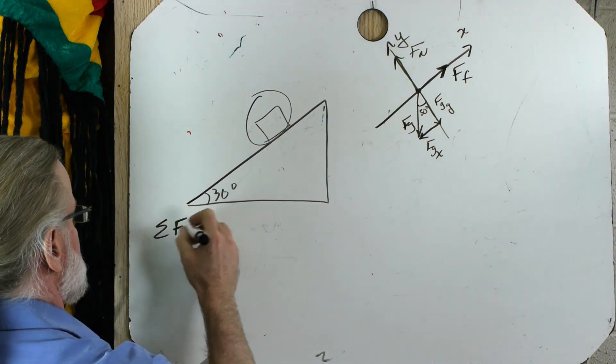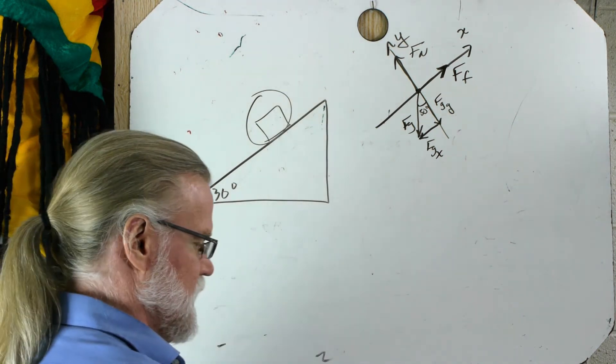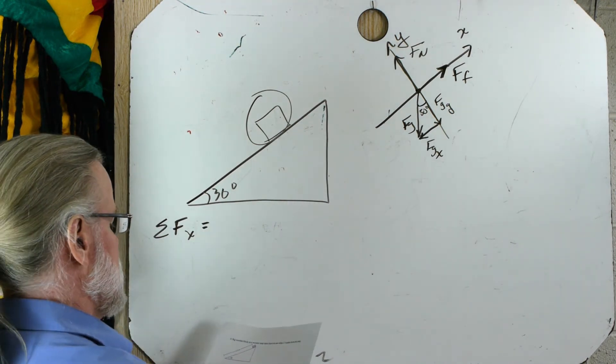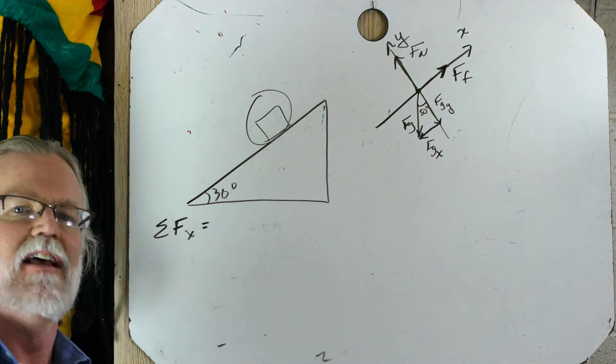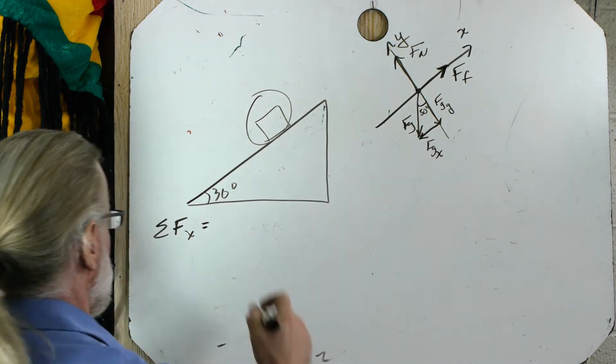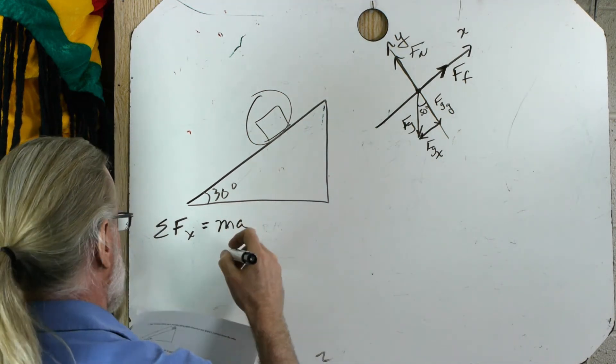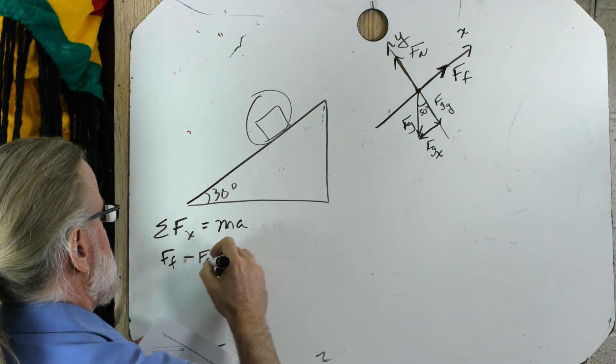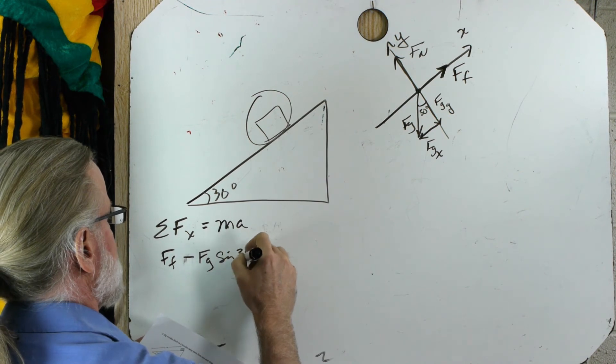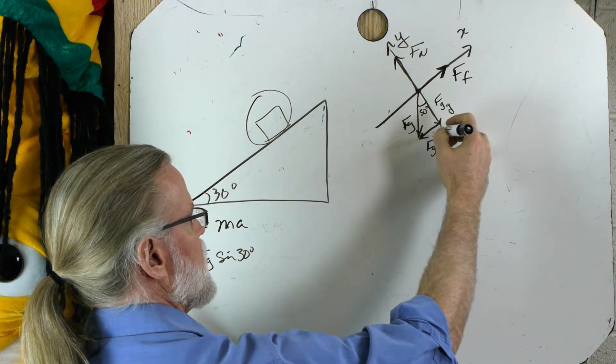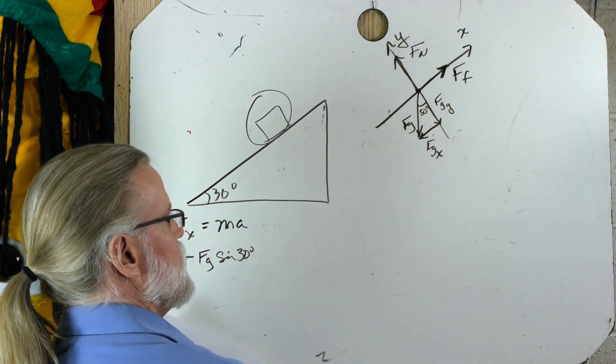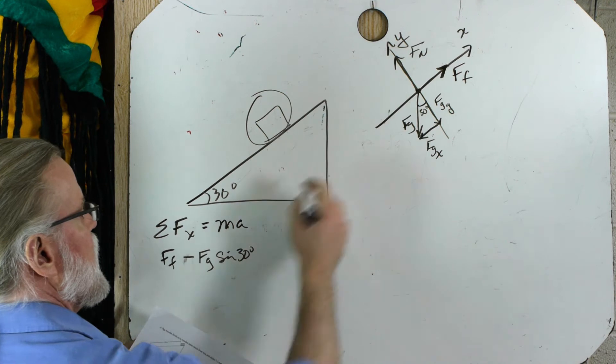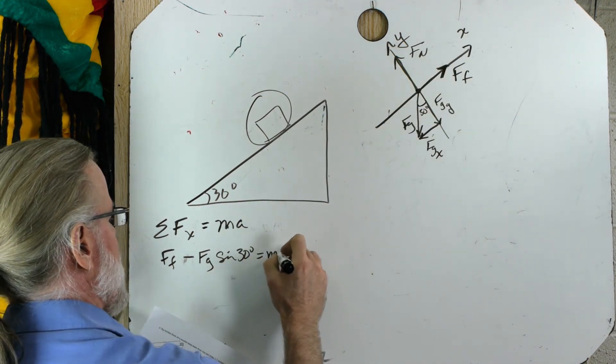And the sum of the forces in the x direction. Let's see. Looks like we're going to be accelerating along the x direction because we're sliding down, starts from rest and slides down the ramp. If it's starting from rest and sliding down, it must accelerate. It starts from zero, speeding up. So we must have a mass times an acceleration. We have the force of friction. And downward we have fg sine of 30 degrees. We had to recognize that I have a right triangle here. This is the opposite side of the right triangle. That is going to be the sine function. This is the adjacent side of the right triangle. That is going to be the cosine function. So we have this going up, pulling down. And that equals mass times acceleration.